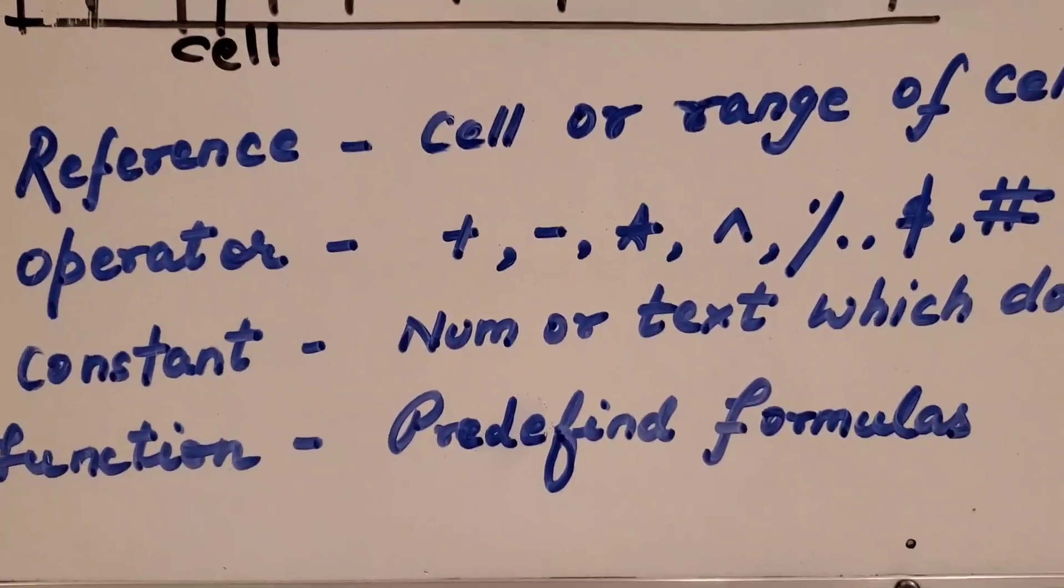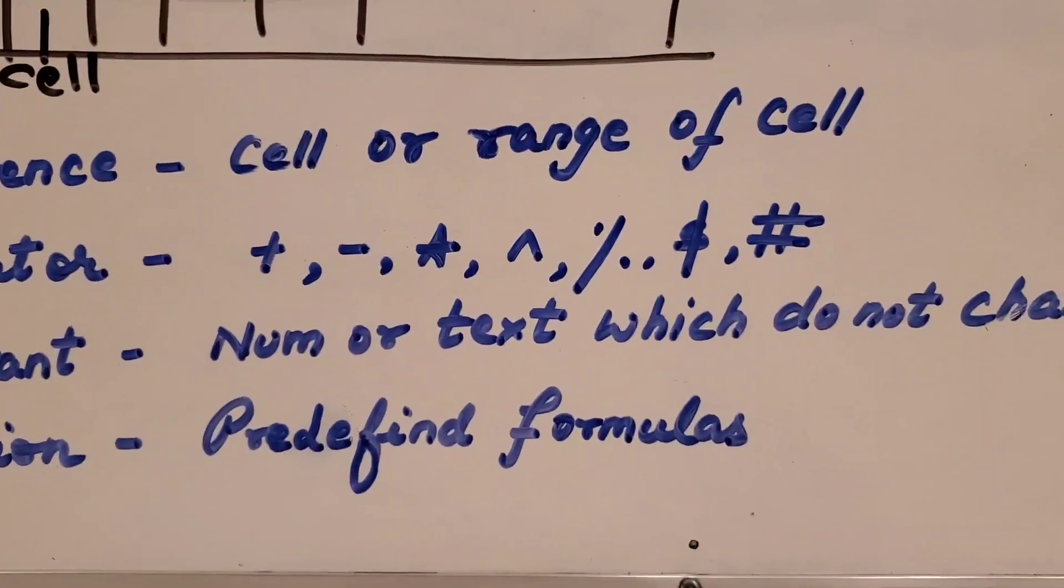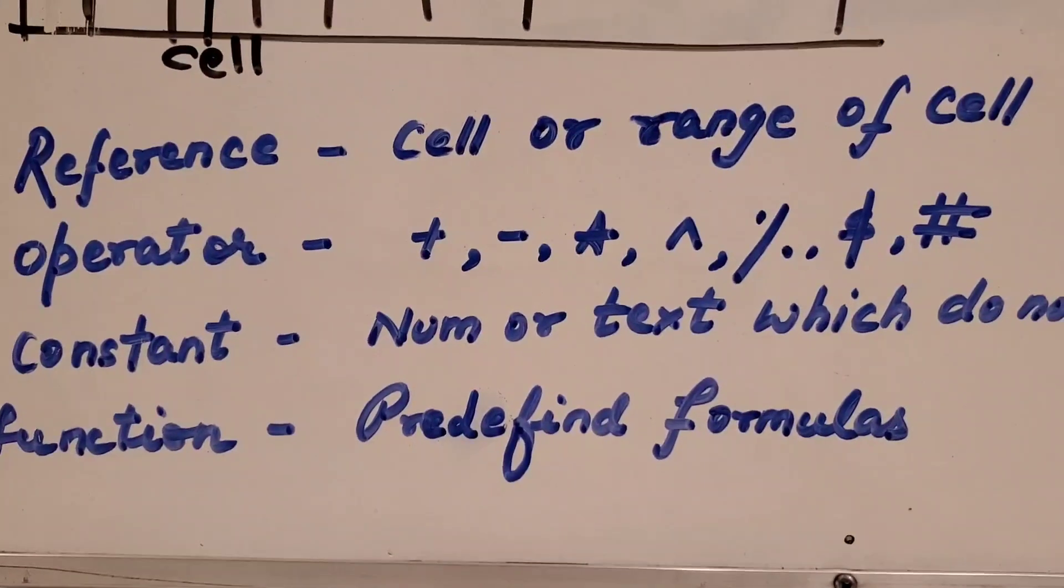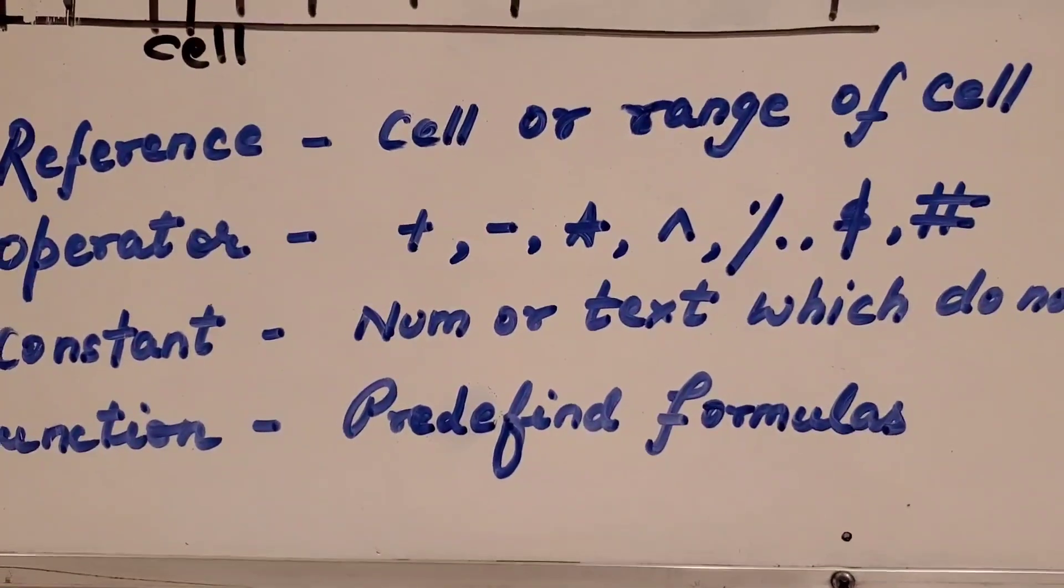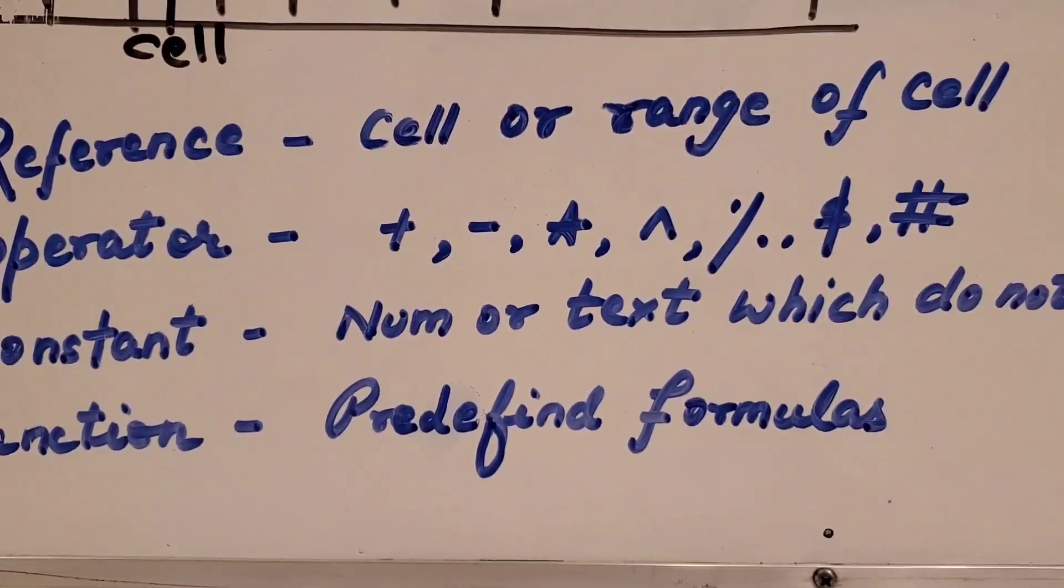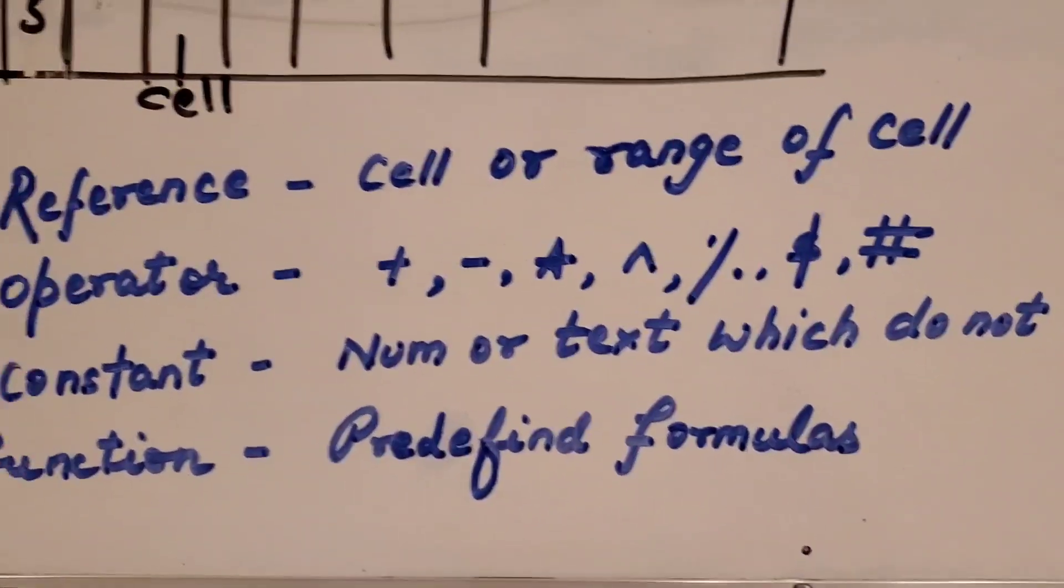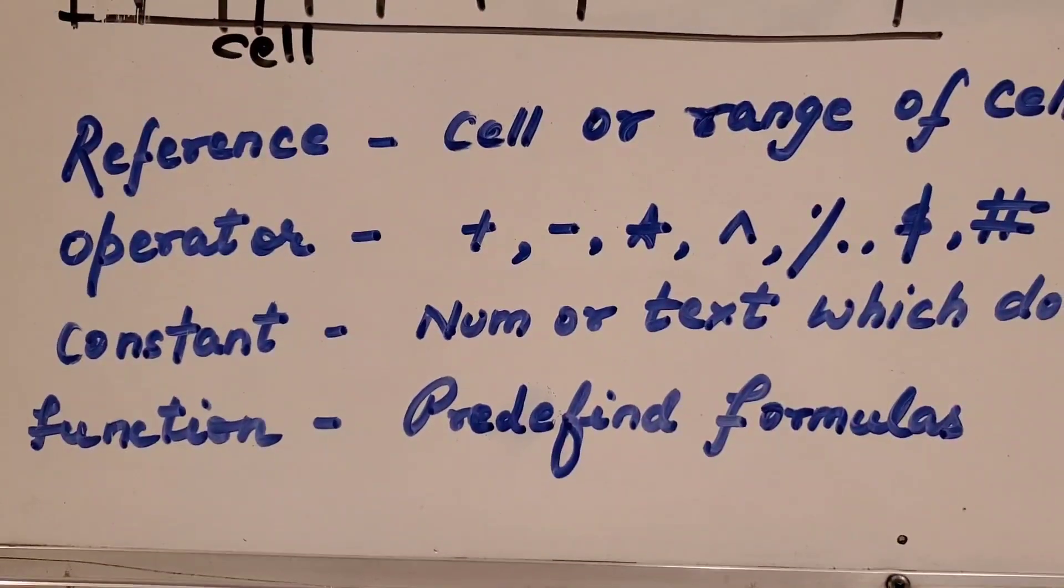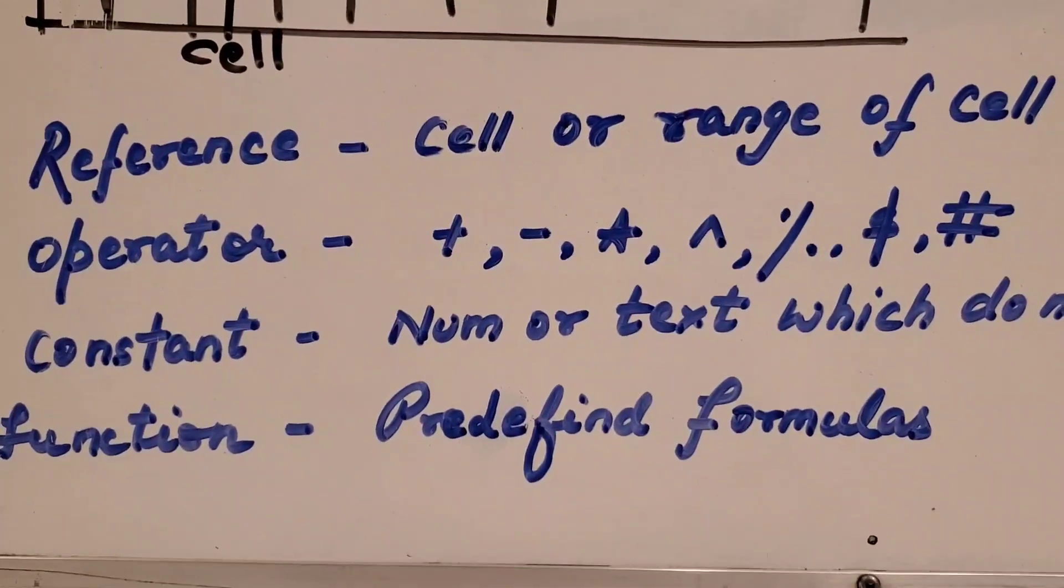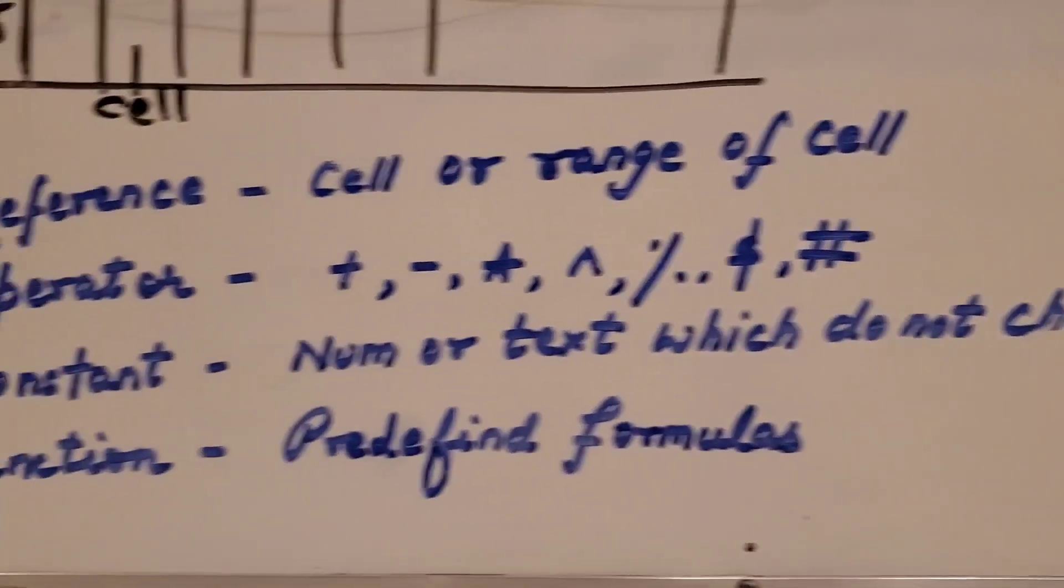We were talking about reference. Reference means an address or a name of anything. So, cell or a range of cell, its address is called its reference. Then the operators, like all the kind of symbols we will use in a calculation, they are called operators. Plus, minus, asterisk, then exponent, then percentage, then dollar sign, and then hash sign. Then the constant. Constant values never change during the calculation. So, a number or text which do not change, we call them constant.